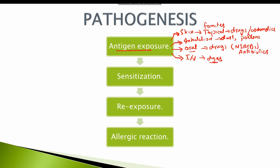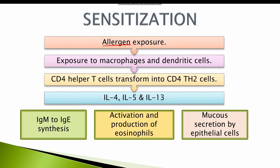Once the person is exposed to the antigen, the body gets sensitized, which means the body is prepared for the next exposure, ultimately leading to the allergic reaction. Whatever the source of the antigen, once it enters the body through any route, it is presented to macrophages and dendritic cells, also known as APCs or antigen presenting cells. These cells release interleukin-4, which upregulates the transformation of naive CD4 helper T cells into CD4 TH2 cells, which play a key role in sensitization of the individual to the antigen.